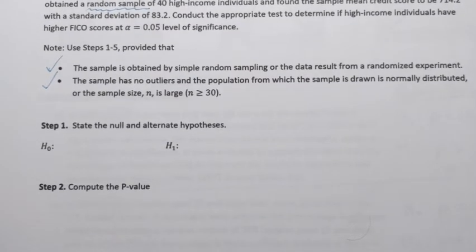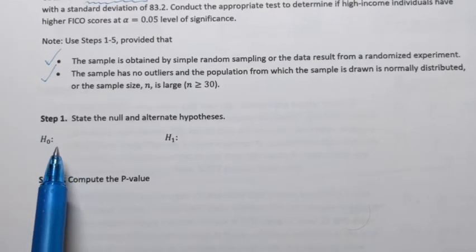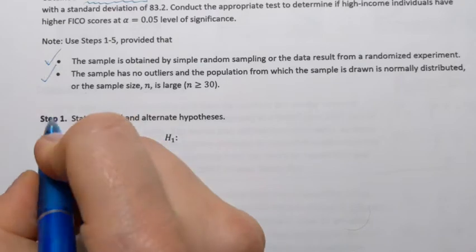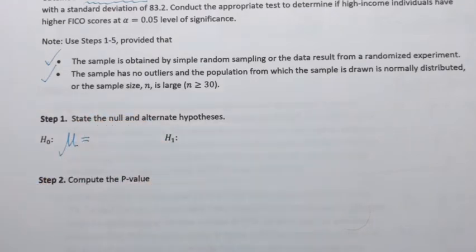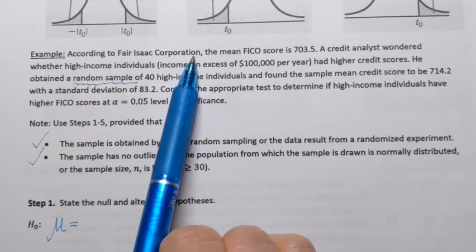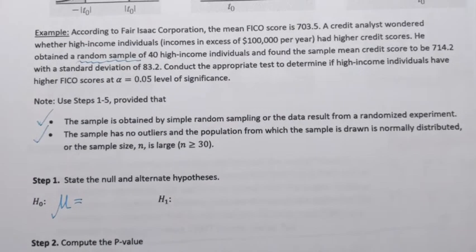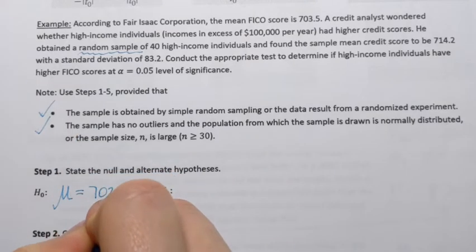And in the first step, we're going to determine the null hypothesis and the alternative hypothesis. So in other words, we need to know the hypothesis structure. And that's something that we'll need to put in the calculator. The null hypothesis is always the one that gives the specific value of the parameter. Well, the parameter we're working with here is population proportion. Remember, it's mu. And what population proportion are we given? Well, that's the first sentence. According to Fair Isaac Corporation, the mean FICO score is 703.5. That's the given population mean. So 703.5.